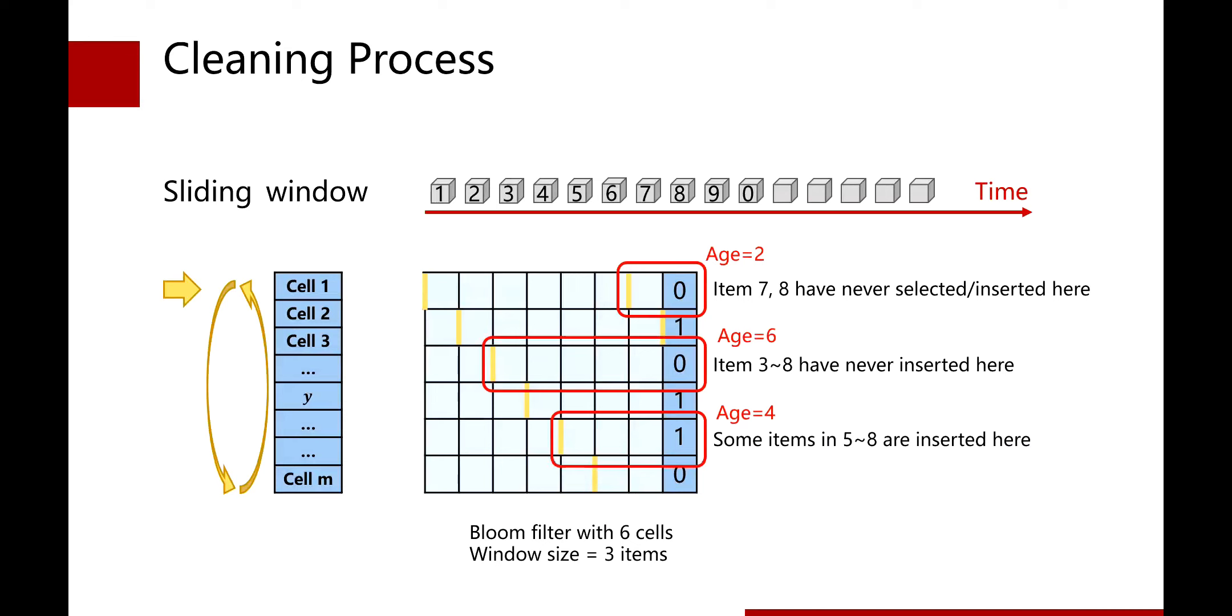Therefore, the age of the first cell is two. Since the first cell is zero, it means that items seven and eight have never been selected or inserted in the first cell. Similarly, the third cell is zero, it means that items three to eight have never inserted to the third cell. The fifth cell is one means that some items in five to eight are inserted to the fifth cell.